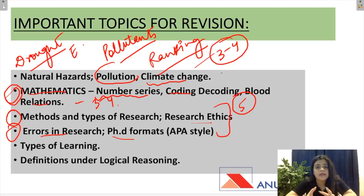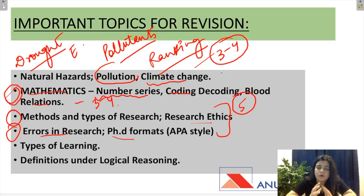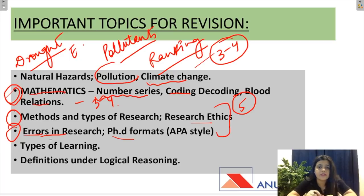For example, yahaan par question aise bhi aa sakta hai ki koi example dee diya jaye aur puchha jaye yeh kaun si research ka part hai. Like accident report — accident report kiska part hai? It is the part of ex post factor research, because pehle accident ho gaya hai, fact pehle ho gaya hai aur causes baad mein trace hote hai, aur aap causes control bhi nahi kar sakte. Errors in research mein bhi baat aa sakti hai ki kaise kaise errors hote hai research mein — sampling errors bhi aa sakti hai. Ya phir kaunsa feature errors of research mein aata hai ya nahi aata — aise style mein question aa sakta hai.